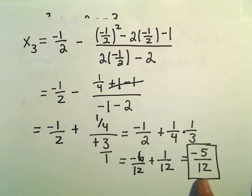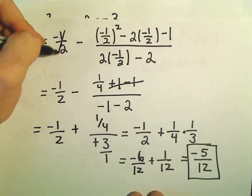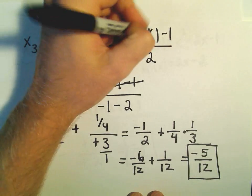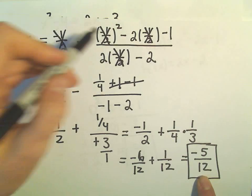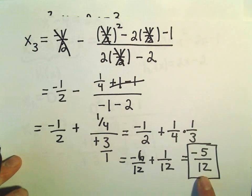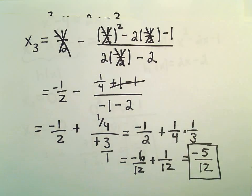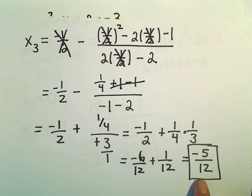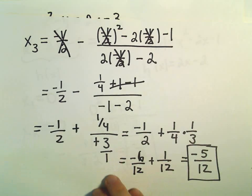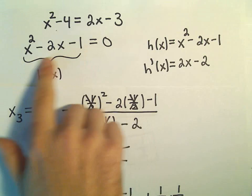If you wanted to find your fourth guess, you would just do the same thing. Instead of having negative 1 halves everywhere, because that was our previous guess, we would just plug in negative 5 halves into all those places. And we would just repeat. And that would give us our fourth approximation. And you could just keep going as long as you want to. Hopefully the number is going to get closer and closer to some specific number.